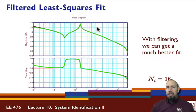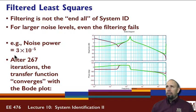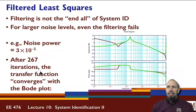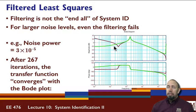What happens if we increase the noise? Filtering is not the end-all of system identification. For larger noise levels — for example, 3×10⁻⁵ — even after 267 iterations, the transfer function converges but is not great. It finds the resonance, but misses the notch altogether, and the low frequency response is not good. So filtered least squares has limitations, even though 3×10⁻⁵ is still fairly small — 100 times the noise from the previous example.